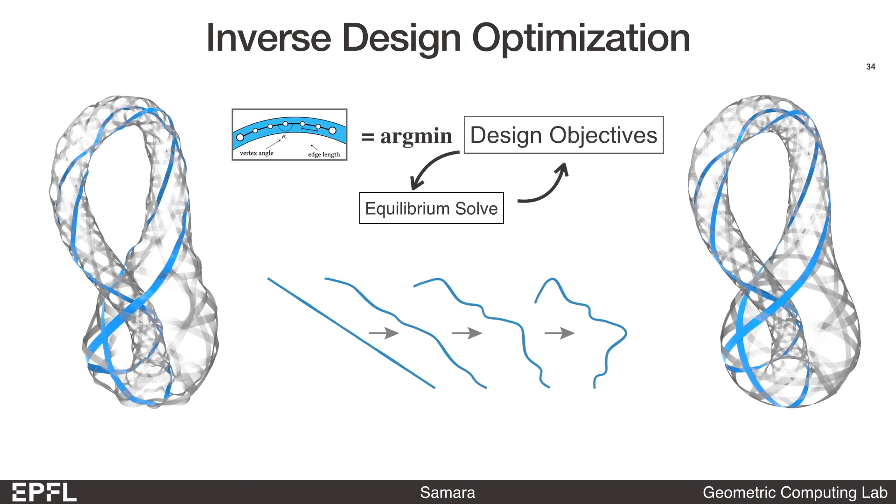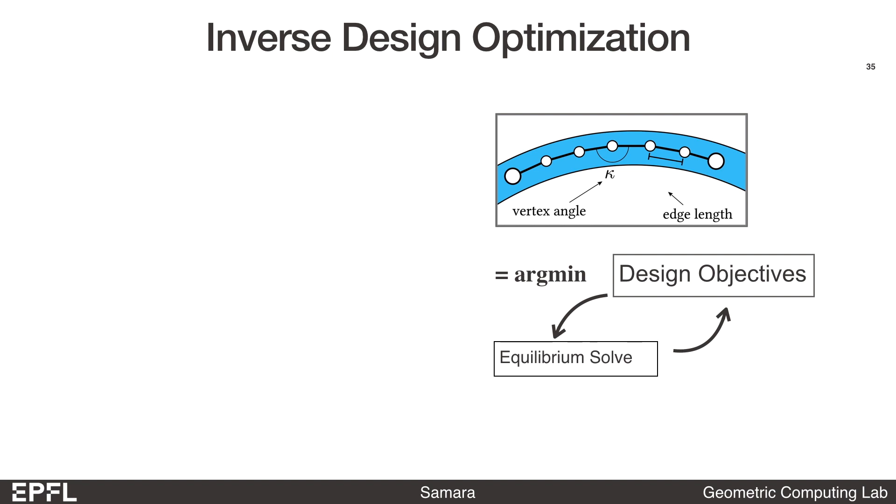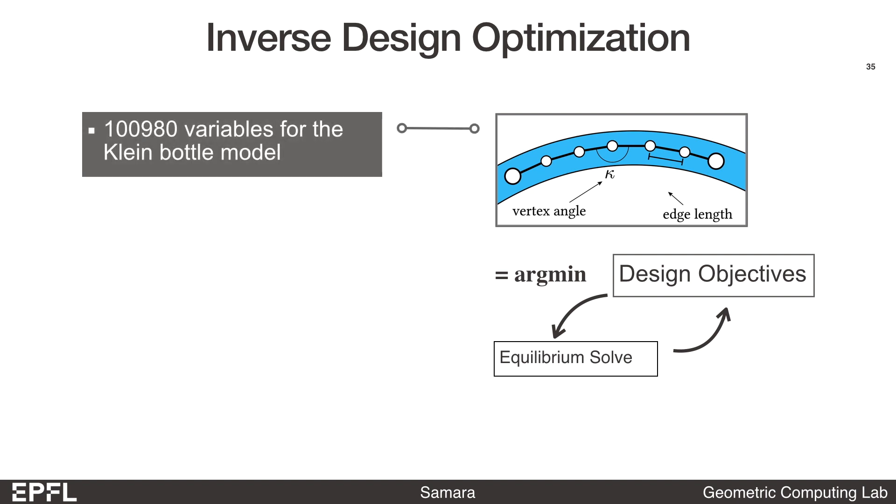A final important component is that we want the optimization to find good design parameters while keeping the structures in static equilibrium so that the forces and the distance to the target surface we compute for the objective are actually meaningful. This means that we need to re-run the nonlinear equilibrium solve at each iteration of the design optimization. This nested optimization problem is very challenging to solve. We typically need to use high-resolution centerline in the elastic rod model to accurately simulate curved ribbons. For example, we have over a hundred thousand variables for the woven Klein model.